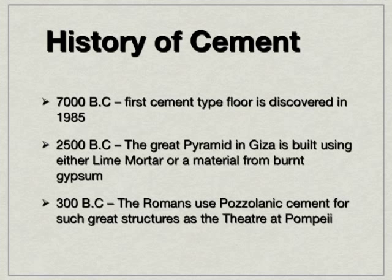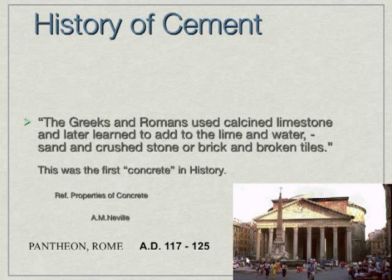Moving up to 500 BC, the Greeks were using lime mortars to build their temples and palaces. And at 300 BC, the Romans were actually using Pozzolan cements for such structures as their theatre in Pompeii, which would seat 20,000 people and still stands today. The Greeks and Romans soon became masters of this material, adding crushed stone, broken brick and broken tiles to make it even stronger. This is the first example of modern concrete.